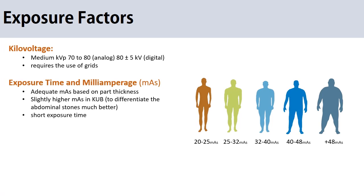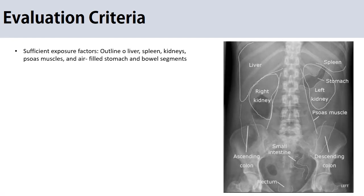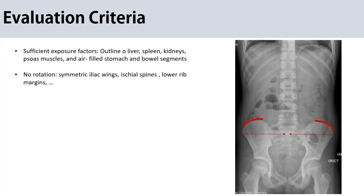Exposure time should be short to minimize motion artifact. To check whether the x-ray is properly done, with good exposure factors you should see the liver outline, the spleen, kidneys, and psoas muscles — especially clear in lean patients — and air bubbles in the stomach, small bowel, or colon. To check for rotation, compare the two sides of the pelvic bone: the iliac wings should be symmetric. You can also check the lower ribs or the lumbar spine.